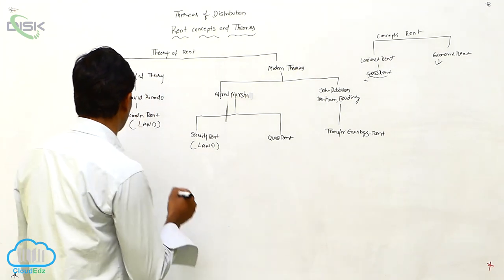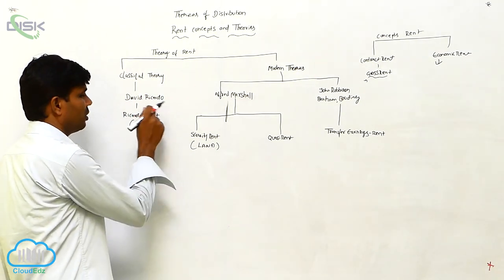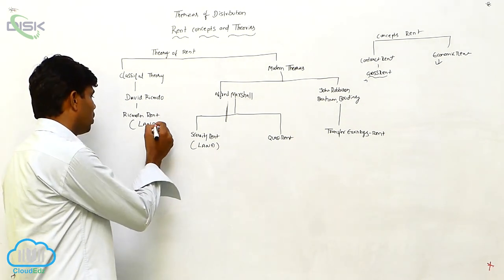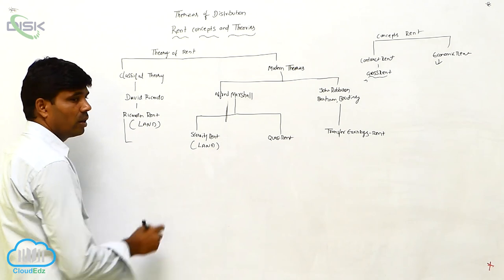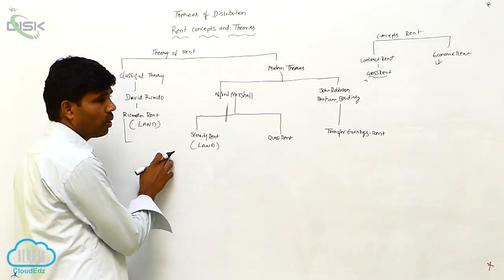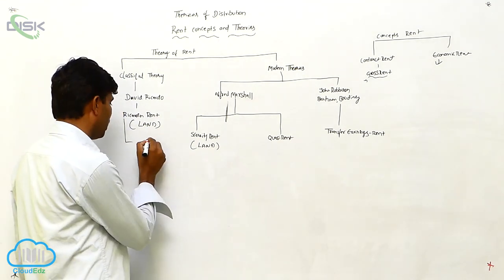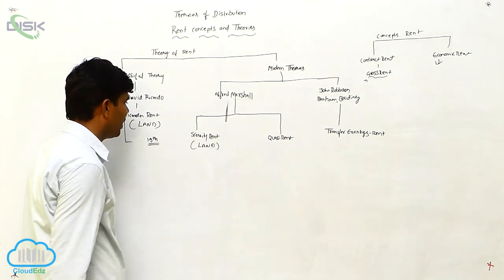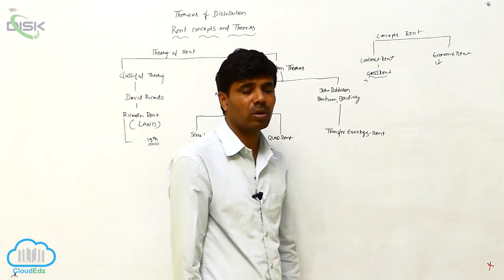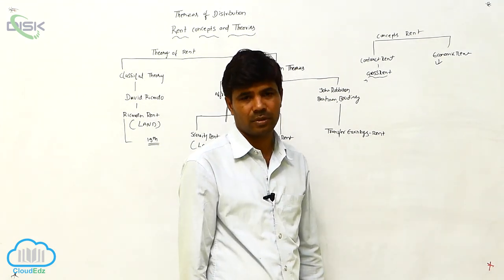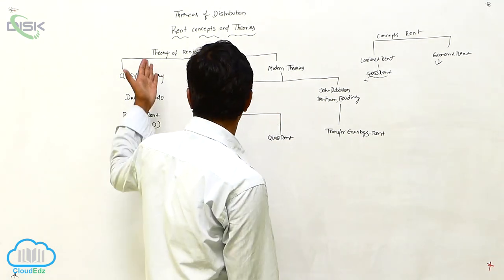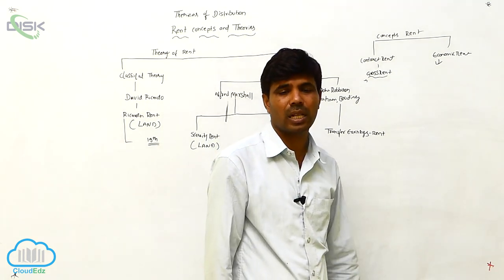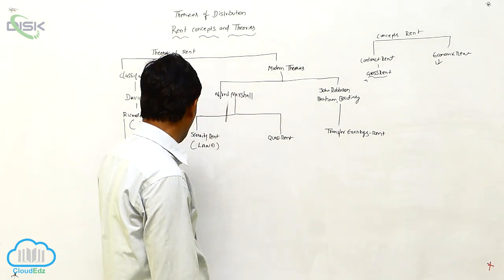Next, we are going to discuss Ricardian rent. David Ricardo explained in the 19th century about land theories — this classical theory he developed. From that classical theory, he explained about land and distinguished between superior land and marginal land.